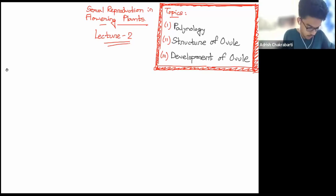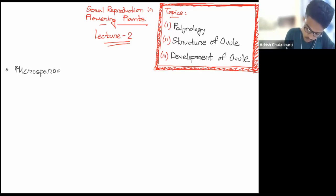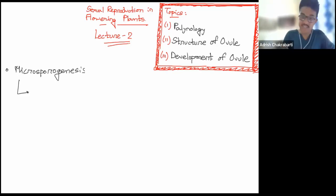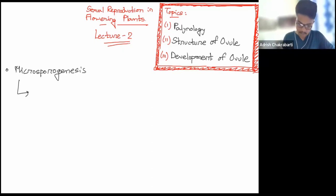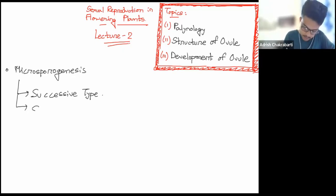Microsporogenesis is of two types: one is the successive type and another is the simultaneous type.